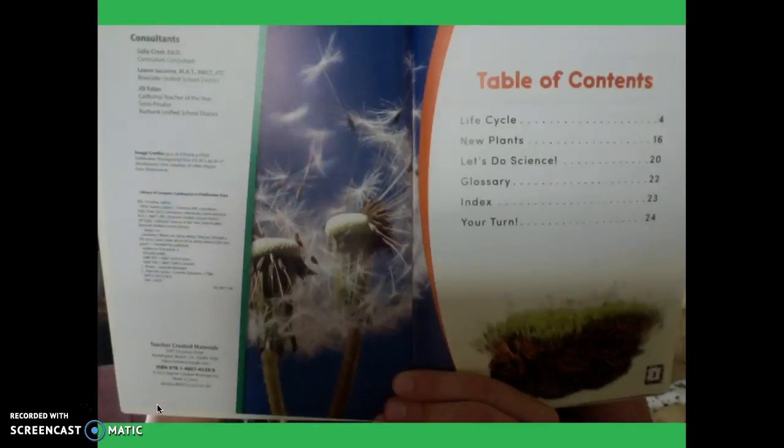To start, we open up the book and we see the table of contents. The table of contents is an important text feature that will let you know what page to find specific information. For example, if I wanted to go straight to the section about science, I would look to Let's Do Science and I'd go to page 20 because that's where it begins. For this lesson, we're going to go in order though.